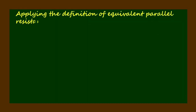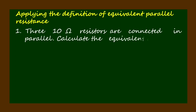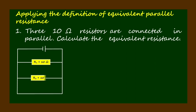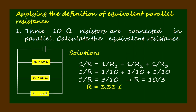Let's solve sample problems applying the definition of equivalent parallel resistance. Three 10-ohm resistors are connected in parallel — calculate the equivalent resistance. First, let's draw the diagram. Solution: 1 over R equals 1 over R1 plus 1 over R2 plus 1 over R3 equals 1 over 10 ohms times 3, so 1 over R equals 3 over 10. Thus the equivalent resistance R in parallel is 3.33 ohms.